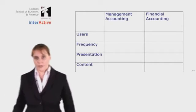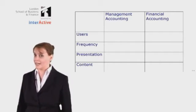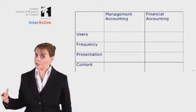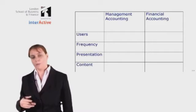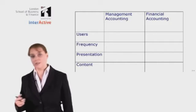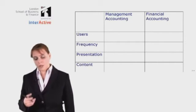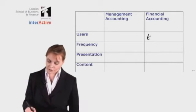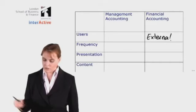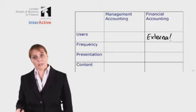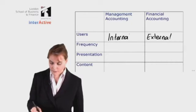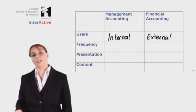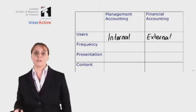Looking at the users first: financial accounting concentrates on producing reports made available to external users — perhaps shareholders, potential investors, or government. The users of financial accounting information are largely external to the organization. On the flip side, for management accounting information, the users would be internal. Management accounting looks at providing information to the management of the organization, so it is internal by nature.